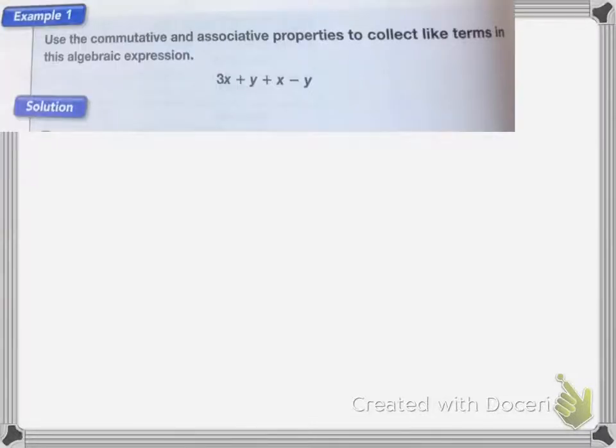Here it wants us to use the commutative and associative properties to collect terms in this expression. We have four terms: there are two x terms and there are two y terms.